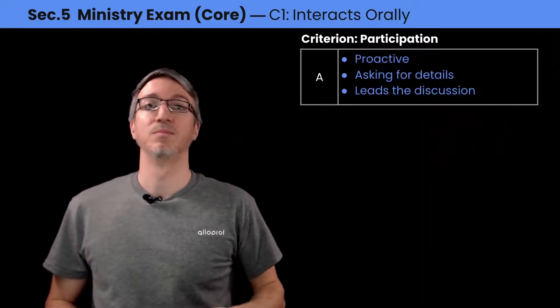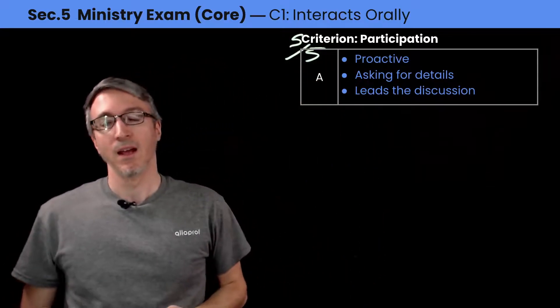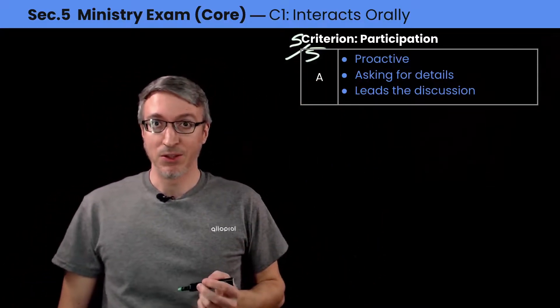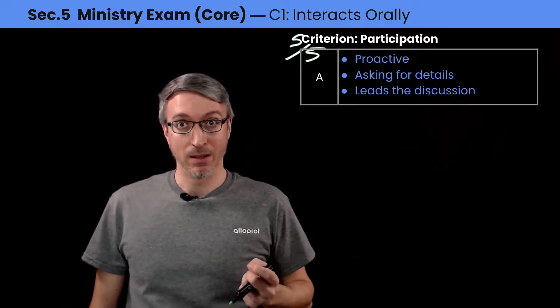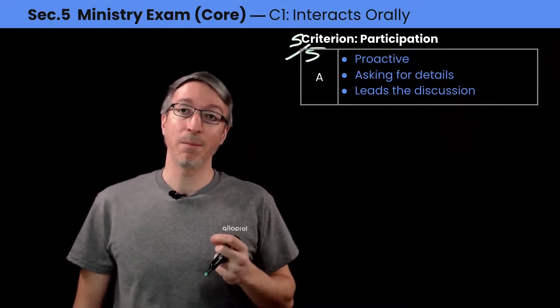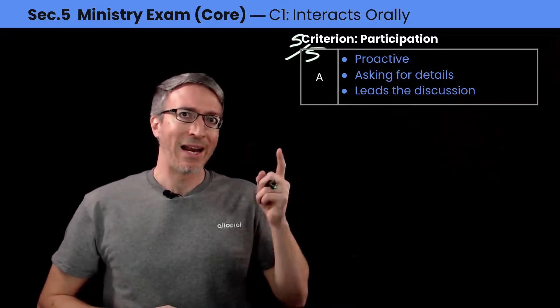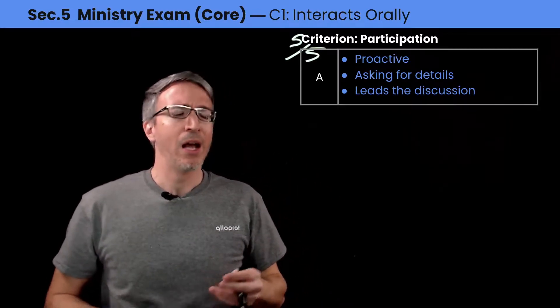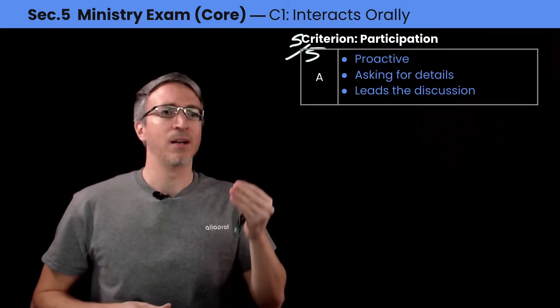Let's look at the criterion participation. To be at the top of the grid, you need three things to get five on five. You need to be proactive, you need to ask for details, and you need to lead the discussion. But what does it really mean? You need a perfect balance between talking to the others, listening at the right moment, asking for clarification, and making sure everyone talks — but you're on top of the game, talking with the others very efficiently.